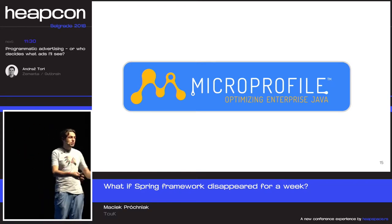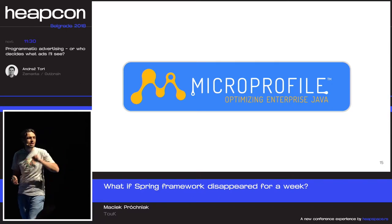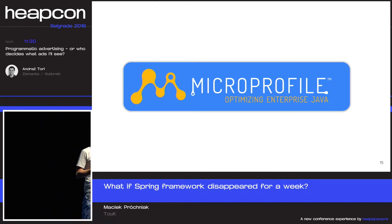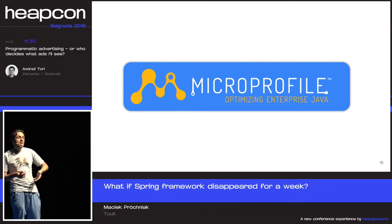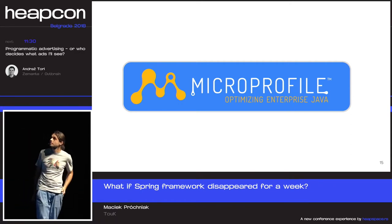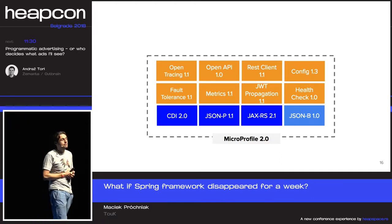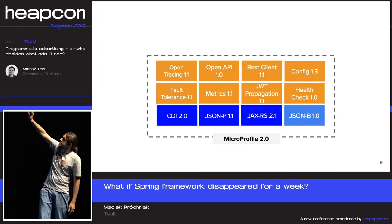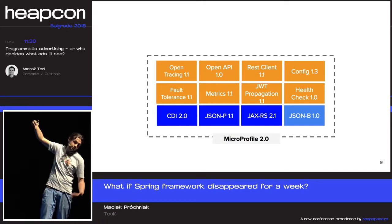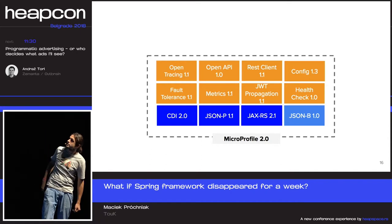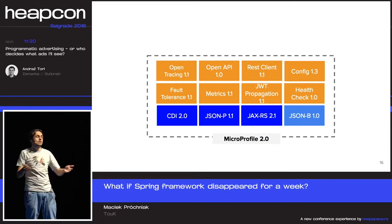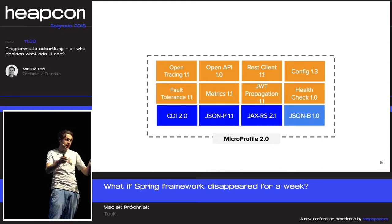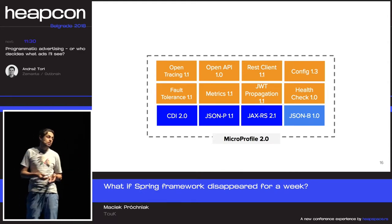One of them is MicroProfile. How many of you were at Emily's talk yesterday? MicroProfile is an effort led by the Eclipse Foundation and large vendors like Oracle, IBM, and JBoss. They came up with quite a few nice APIs — some probably well known to you, like CDI, JSON-P, and JAX-RS — and some less known, like APIs for injecting configuration, defining health checks, metrics, and so on. These are small, simple, annotation-based APIs, just like Spring, where you can develop microservices.